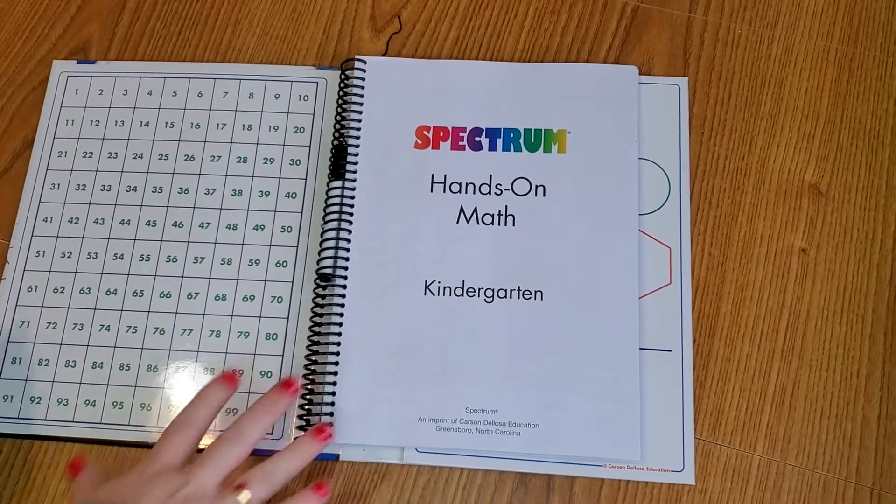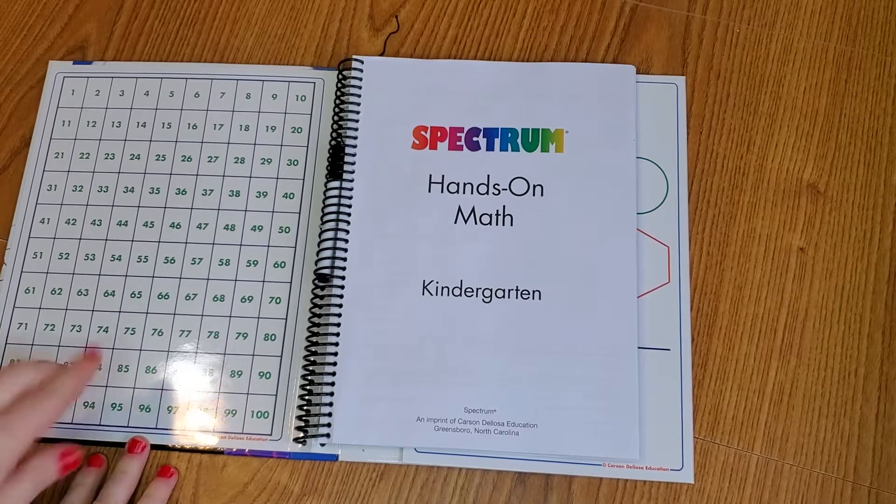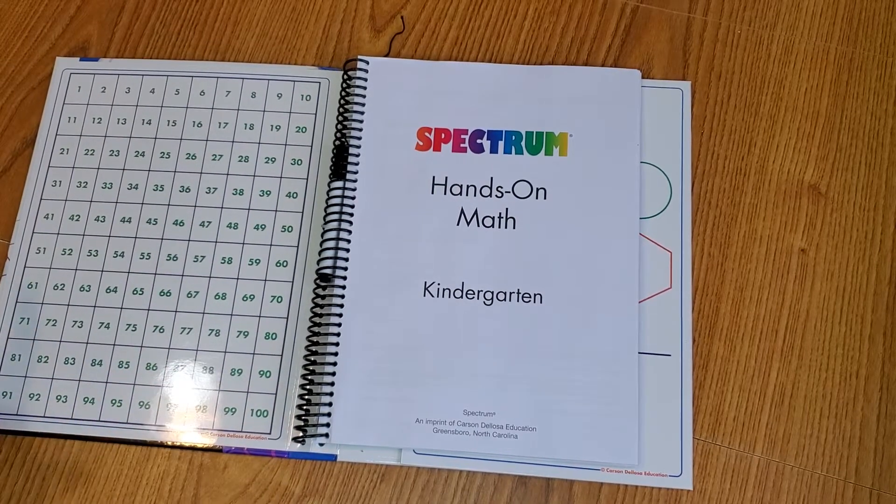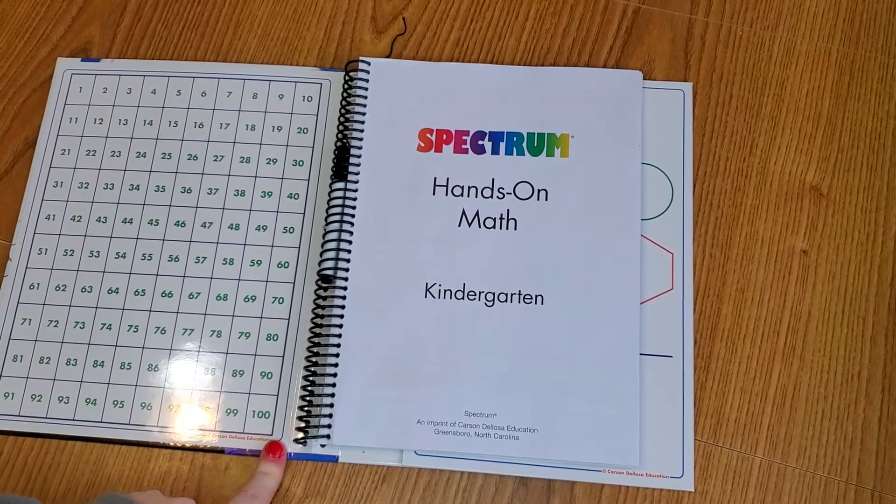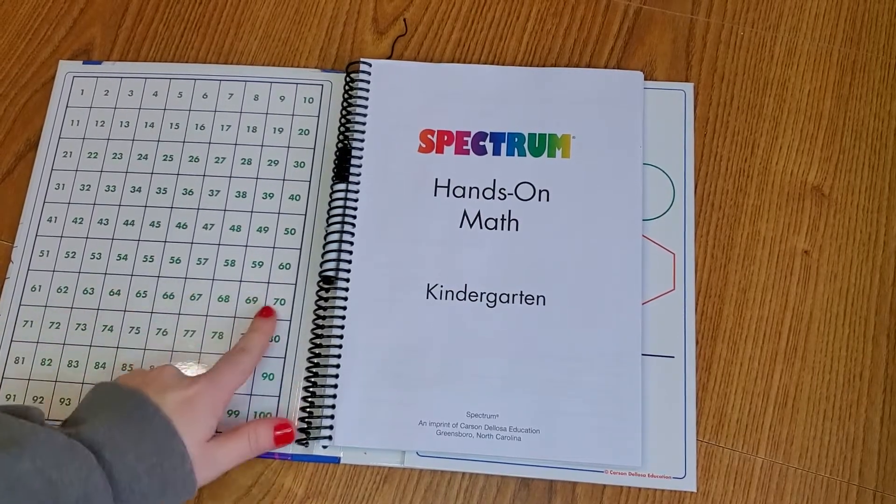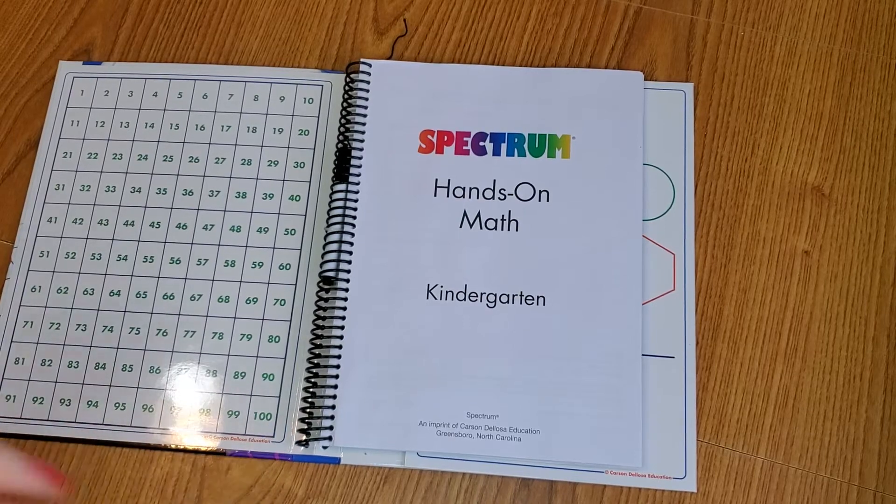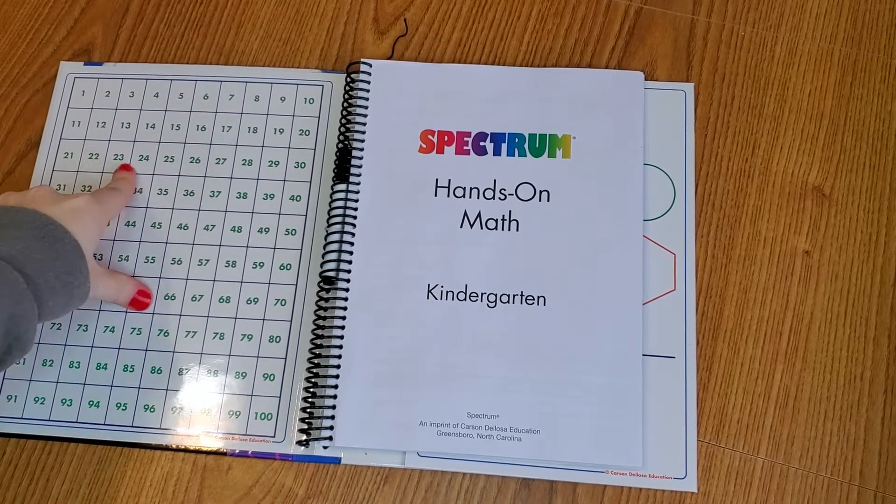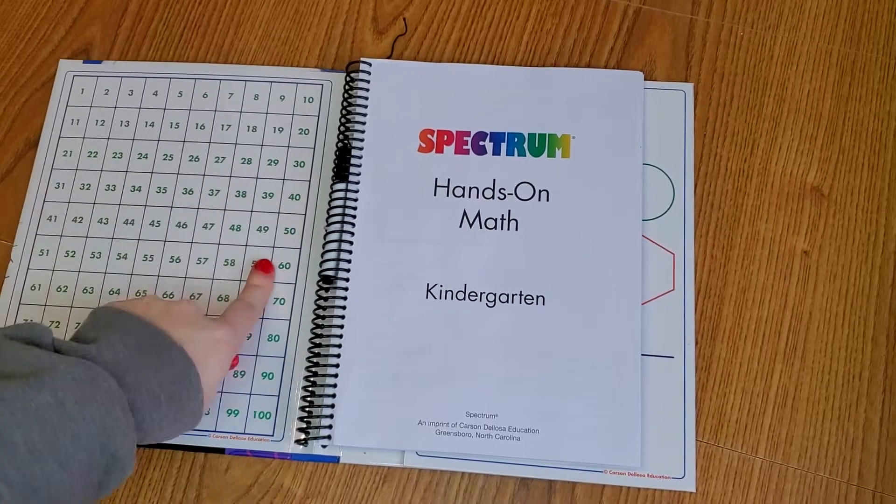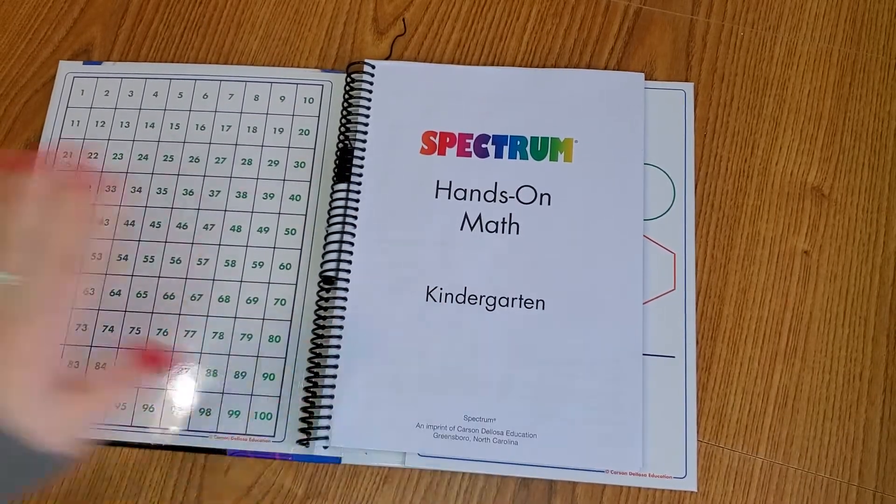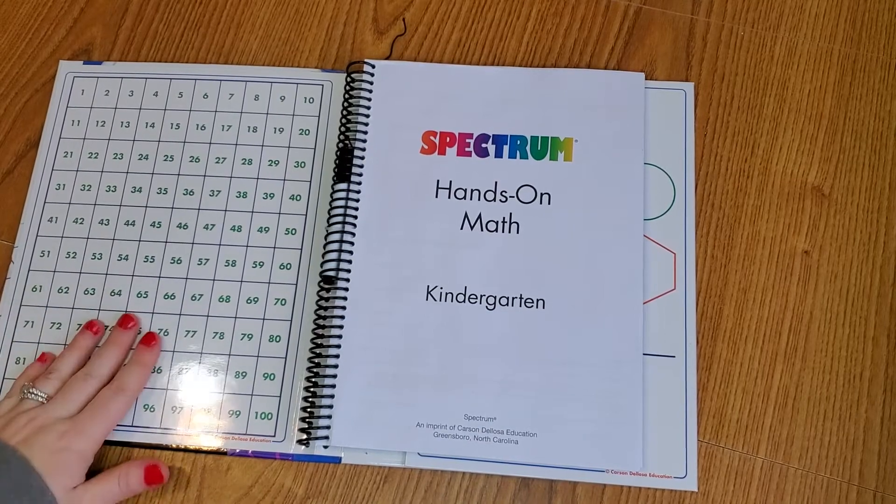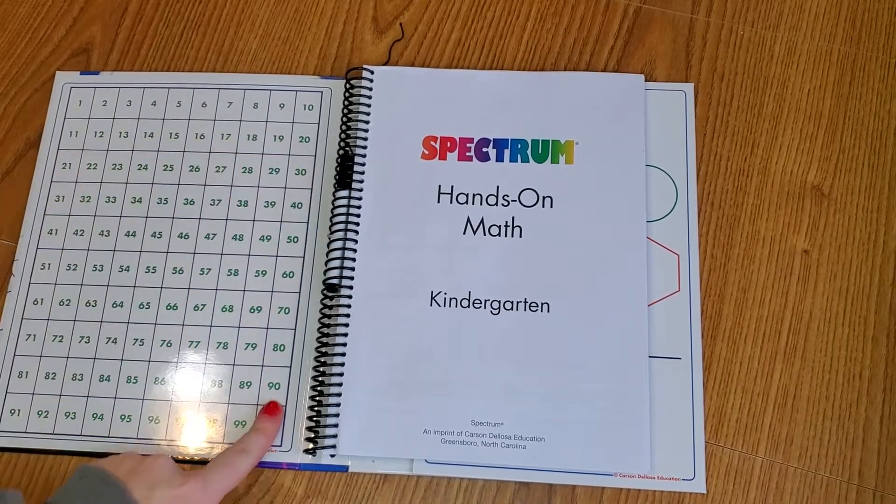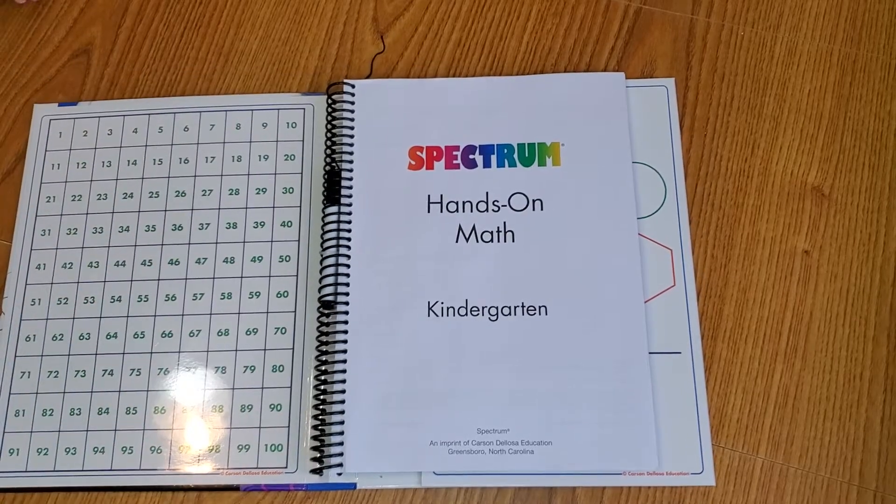So first and foremost, I love right here, you open it up, it has all the numbers. My kindergartner still has a lot of trouble counting to 100. Sometimes when he gets around 70, he says the same numbers over and over again. This helps him see the way that the numbers are faced so he can do a problem in here and then go back and make sure that 3 is the right way, counting by 10s, 5s, all that kind of stuff.